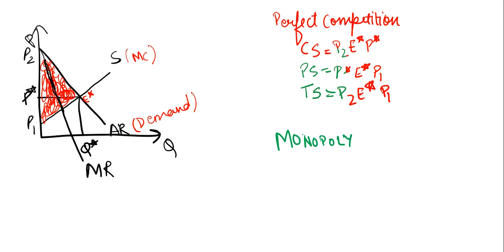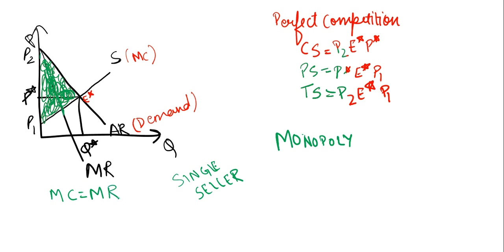Now let us consider the case of monopoly. We know that monopoly is a market condition where there are multiple buyers but a single seller. Since there is a single seller, the seller has a monopoly over price and quantity. The seller would like to maximize its profits, and we know that profit is maximized at the condition where marginal cost equals marginal revenue — that is where supply equals marginal revenue.